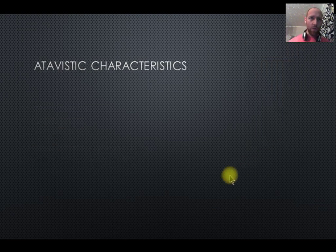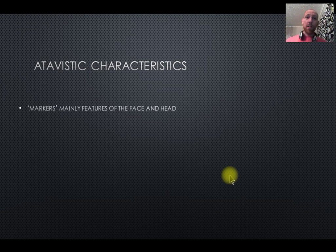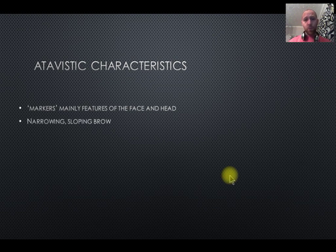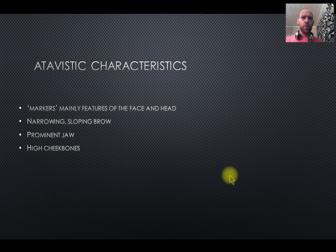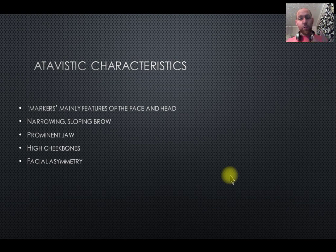What is atavistic form? These characteristics indicate less evolved heritage — they are markers, mainly features to do with the face and the skull. Some examples are a narrowing or sloping of the brow, a prominent jutting jaw, high cheekbones, and facial asymmetry. Facial symmetry is actually seen as very attractive, and attractive people are considered more trustworthy — so we can see where Lombroso is getting his idea about facial asymmetry.